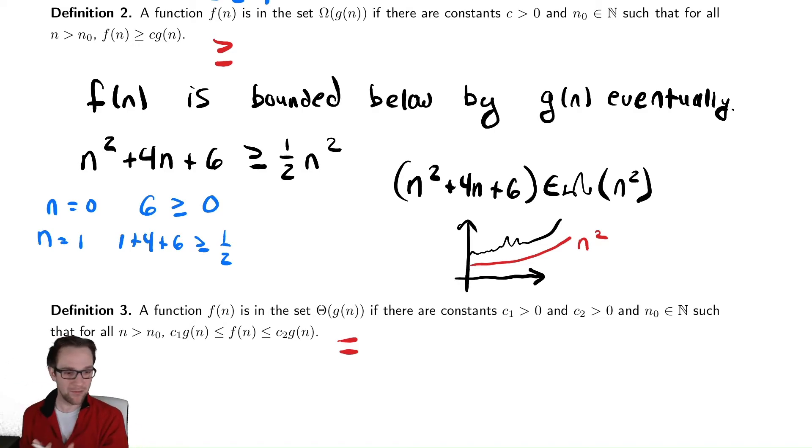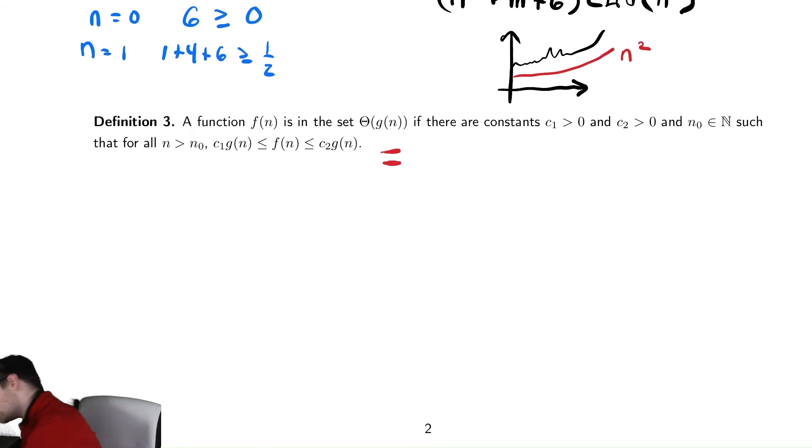That's really somewhat useful, especially the bounding above turns out to be useful when you can tell someone my algorithm won't take any longer than some function. I can tell you, guaranteed out the gate, my algorithm takes no longer than n². That's already a useful thing to tell a user. However, it is more useful to say it will look exactly like some other function. So, if we combine these two ideas, we get our theta notation.